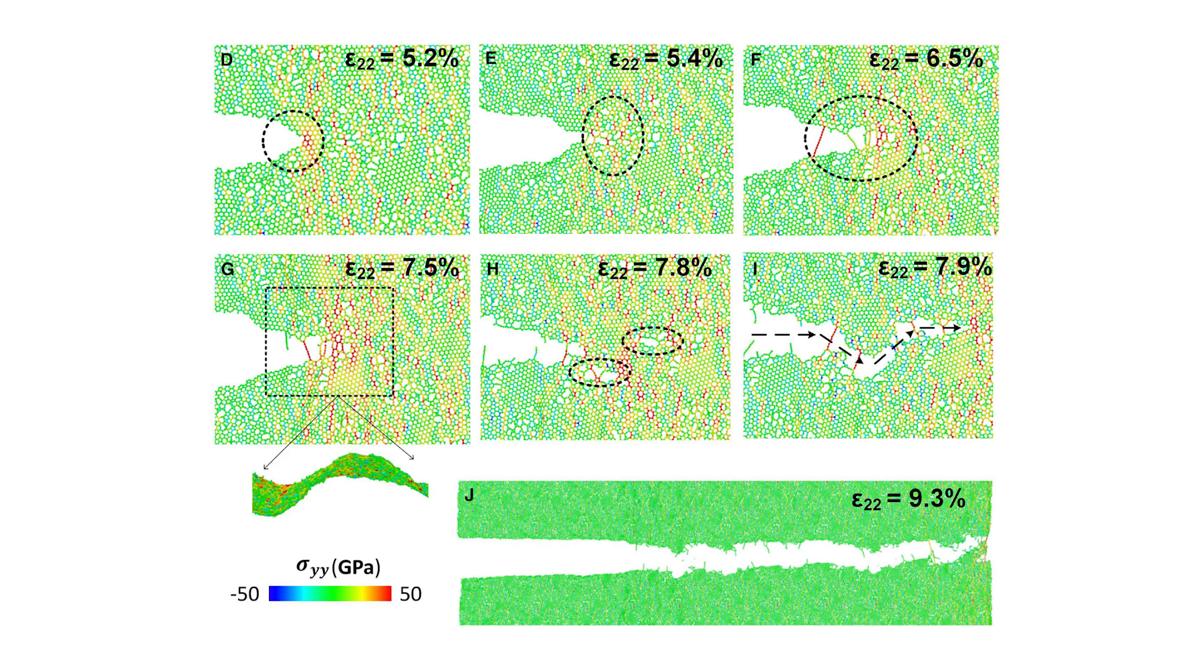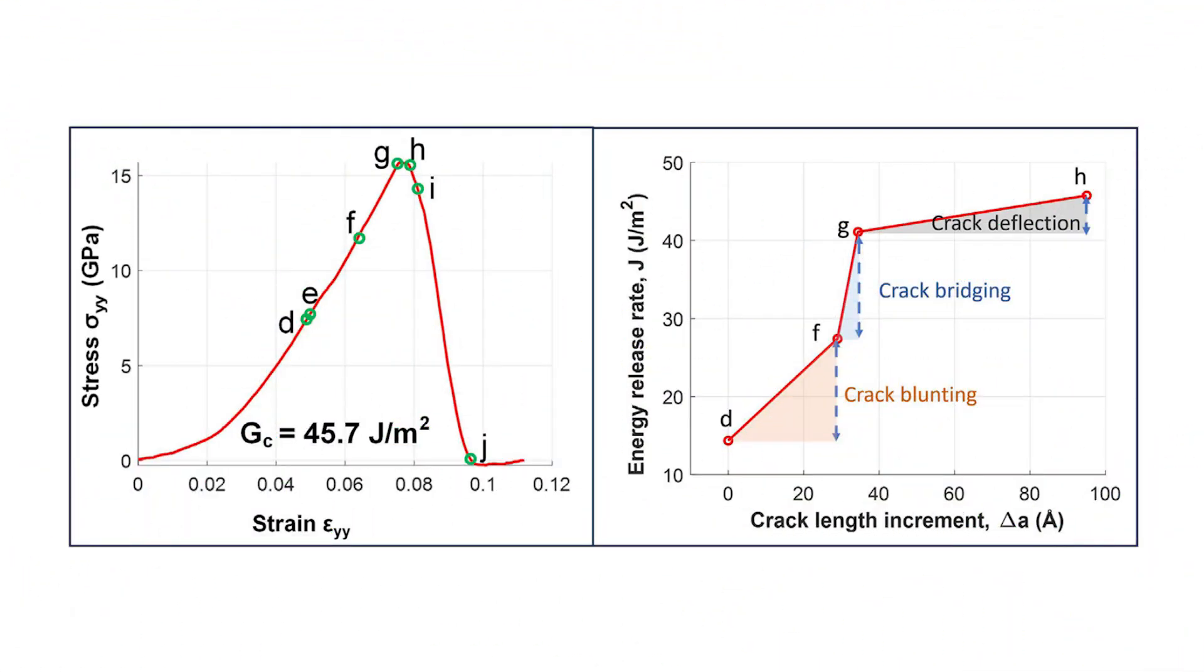But when carbon is called amorphous, it means the carbon atoms aren't arranged in that neat repeating pattern. Instead, their arrangement is more random.